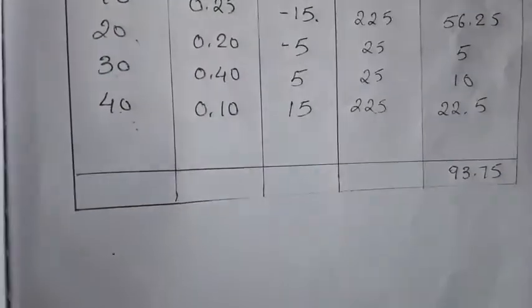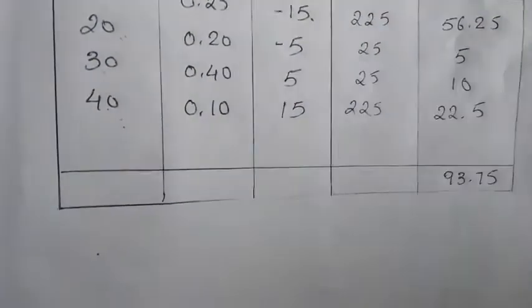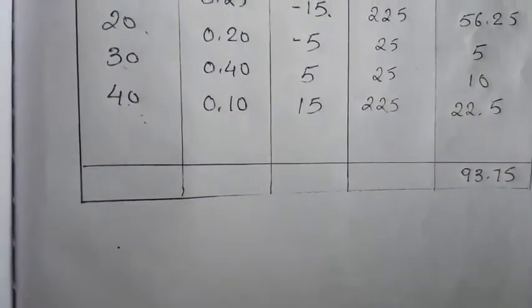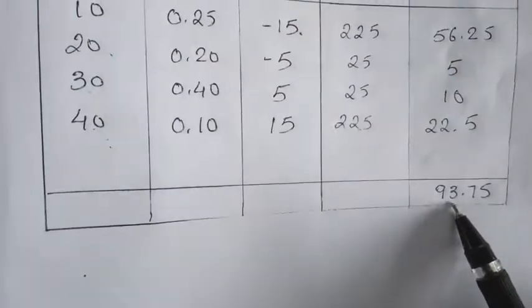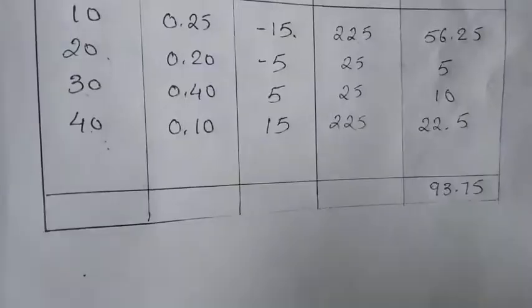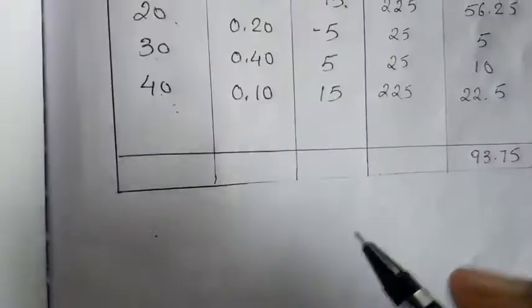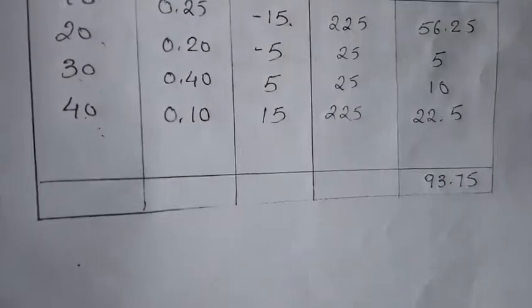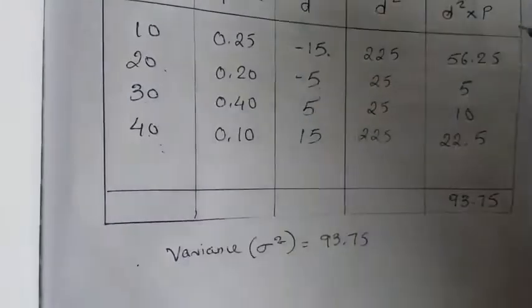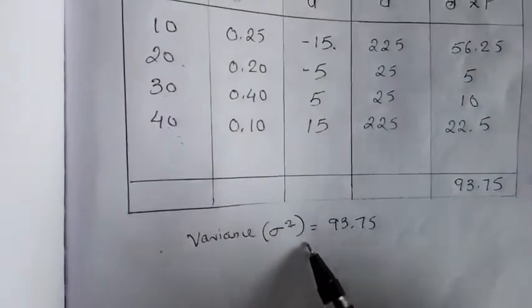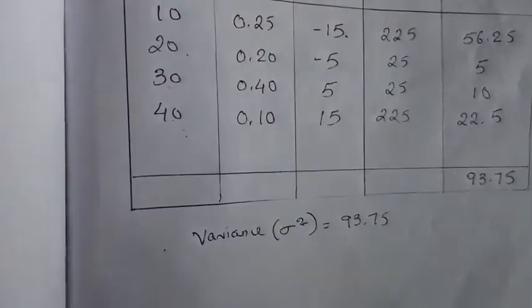With this calculation, you will get 90.25. This is the variance — the variance means the standard deviation squared.